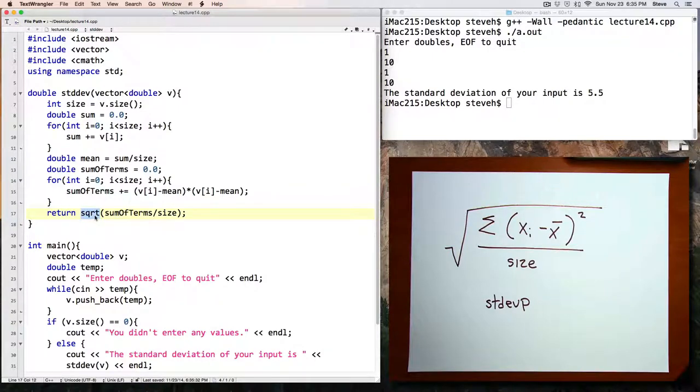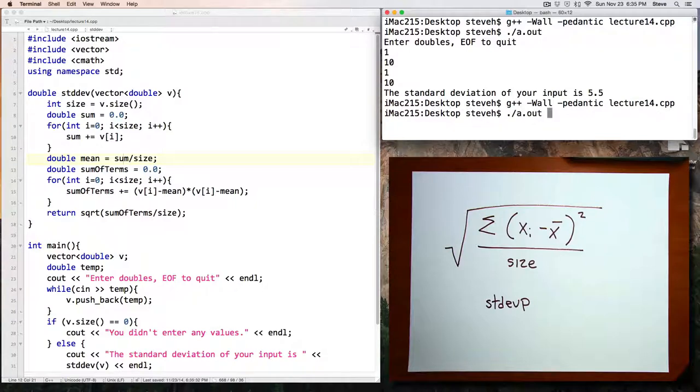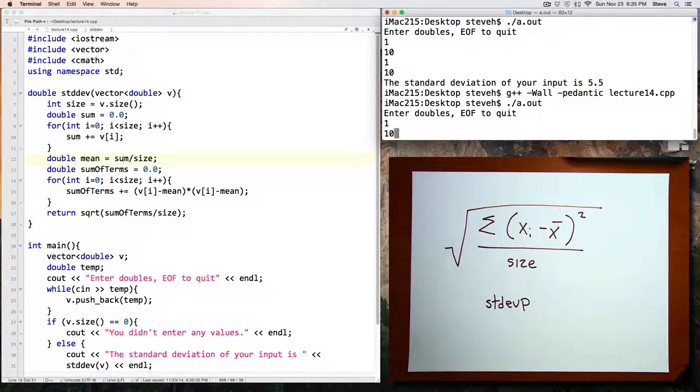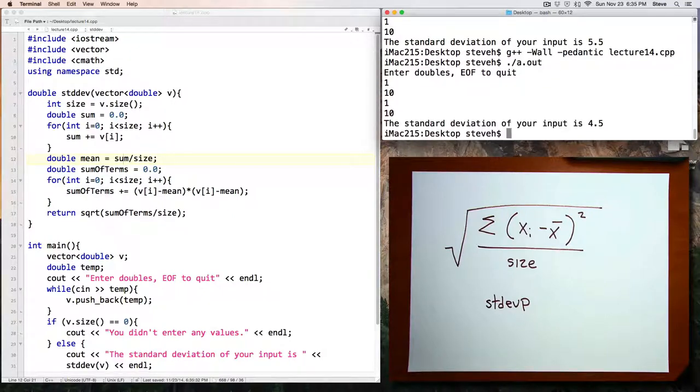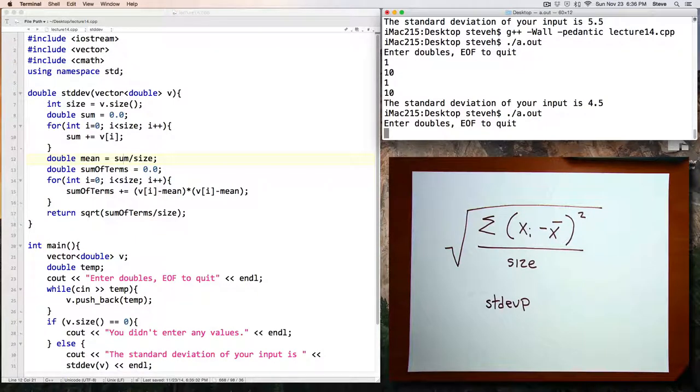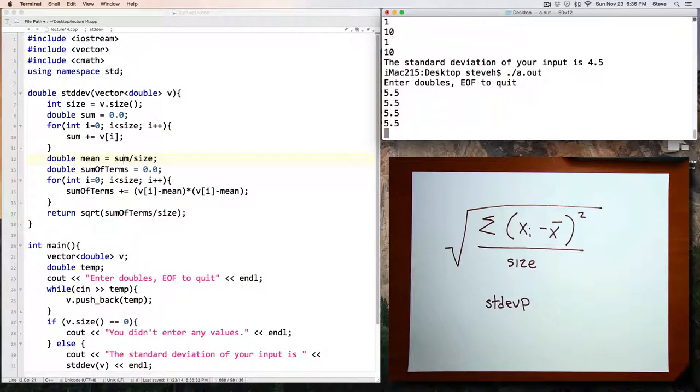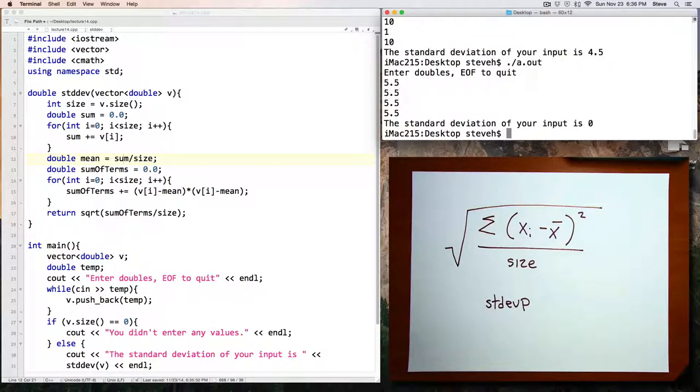By the way, the square root comes from the cmath library, and you might not have seen me add that in here. On some systems, it will actually automatically include cmath for you, but not on other systems. Let's save and recompile and run and enter doubles: 1, 10, 1, and 10. Standard deviation is 4.5. That's because that's, on average, how far those values are away. And let's try this again. We'll try 5.5, 5.5, 5.5, and 5.5. Standard deviation is 0, because they're all right at the average. That wraps up our first look at arrays and vectors. See you next time.